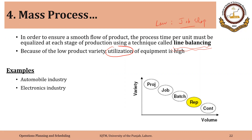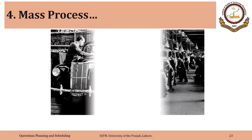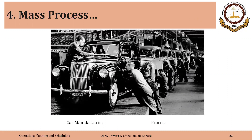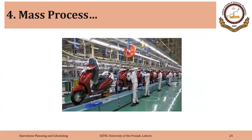The automobile industry and electronics industry, where assembly is taking place, are examples of this type of process. Car assembly specifically — there are many operations in car manufacturing, but we are specifically talking about the assembly process. That is an example of a mass or line process.